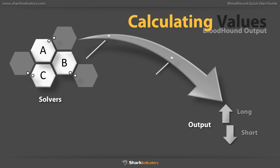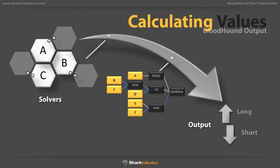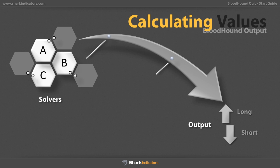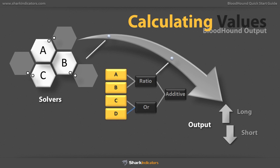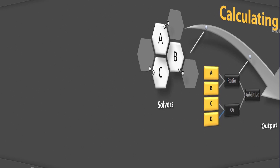For example, you could create a set of rules that work well in trending markets, and a different set of rules that work well in stationary markets. Then simply swap between the two as you trade. Remember, each logic template still continues to evaluate both the short and long sides simultaneously for every bar.